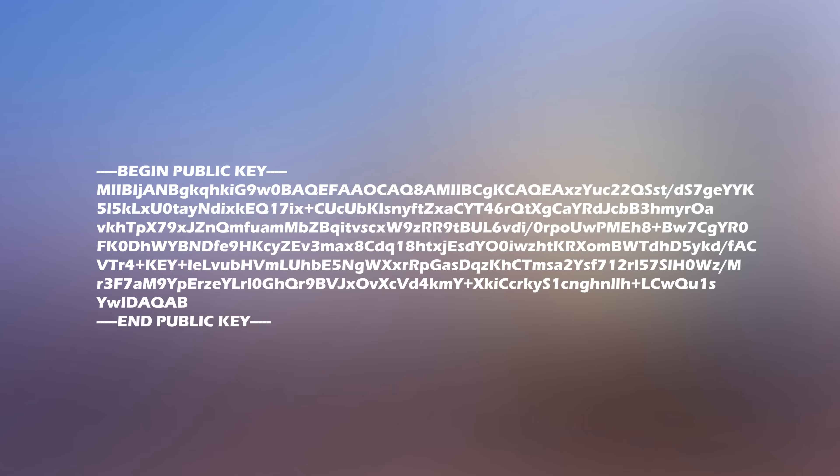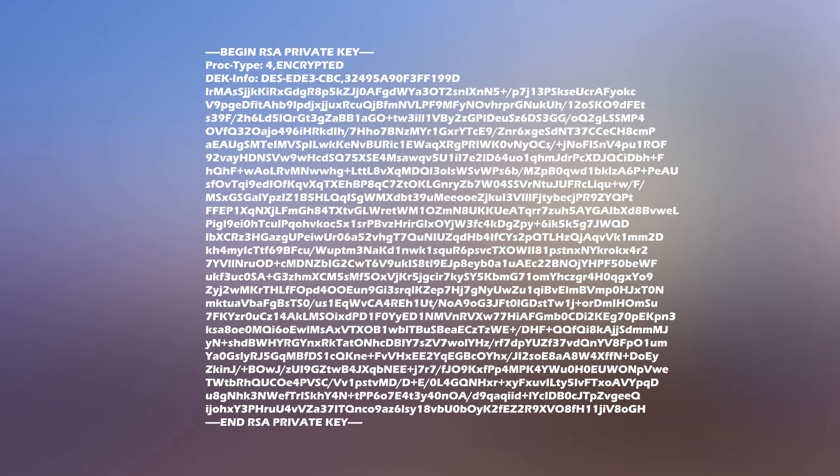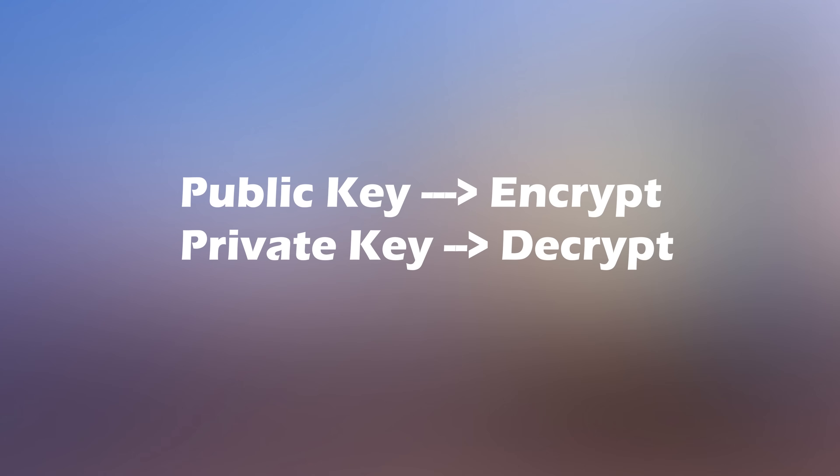This is an example of a 2048-bit RSA public key. Then there is a private key which is never revealed, but is generated as a set. You create a public and private key simultaneously. The secret ingredient to this tech, called RSA cryptography, is that the public key can be used to encrypt a message, but only the party that has the private key can decrypt the message. Understand this carefully: public key to encrypt, private key to decrypt. So it doesn't matter if other parties intercept the message encrypted with a public key. This is because without the private key, the message cannot be decrypted.